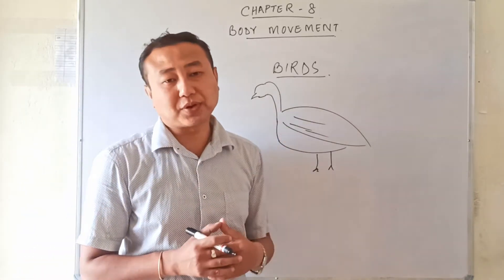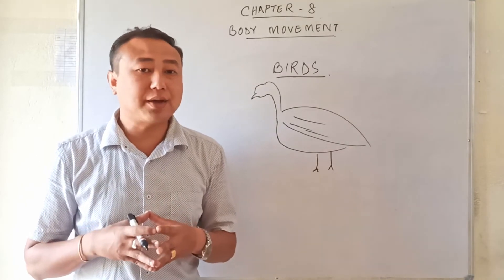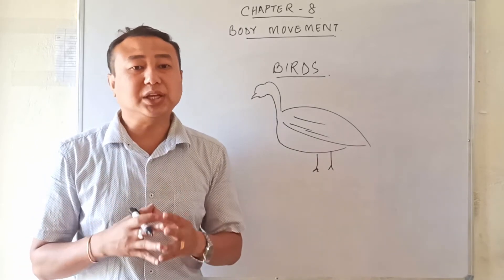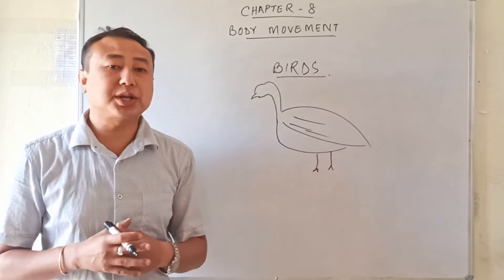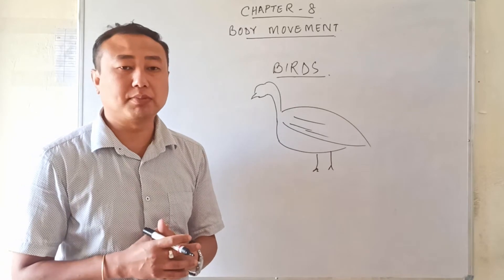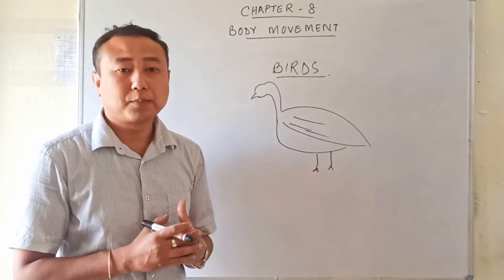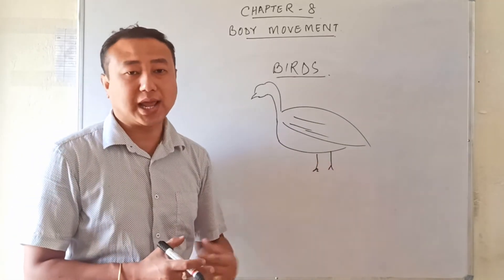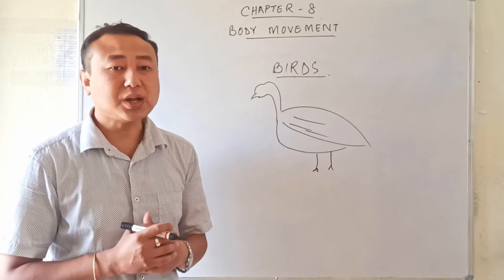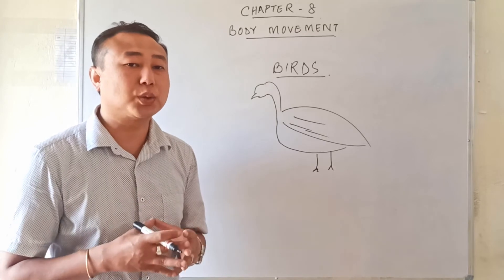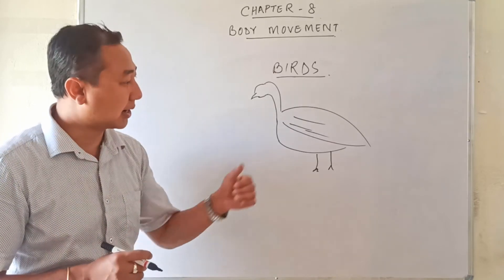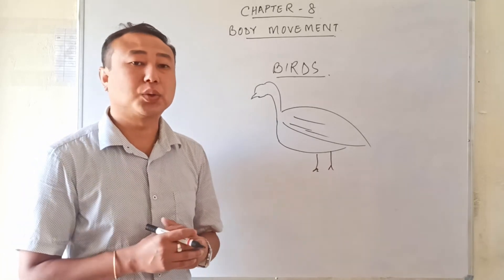In order to fly, birds need a light body. To achieve this, the bones present inside birds are hollow — there is empty space inside the bones. These hollow bones make the body of the birds light. The contraction and expansion of the muscles attached to the legs helps the bird walk on the ground, while the contraction and expansion of muscles attached to the wings helps them flutter their wings and fly. Hollow bones are another adaptation that helps birds fly.